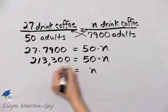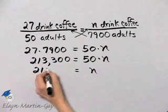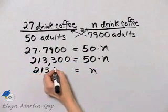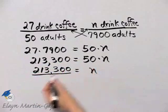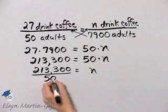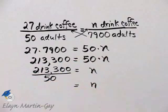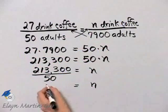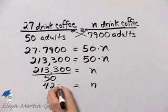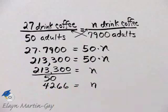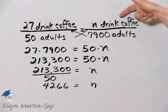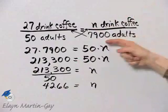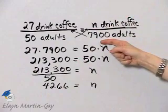And then don't forget, n is equal to this number, 213,300 divided by the number that was multiplied by n, which is 50. So what is n? Divide 50 into 213,300, and you'll find that n is 4,266. Now what does that stand for? That's how many adults we expect to drink coffee in a town of 7,900 adults.